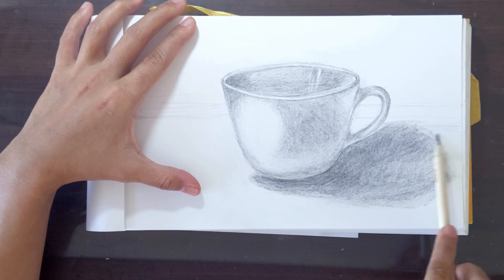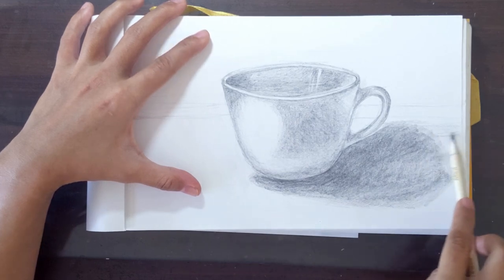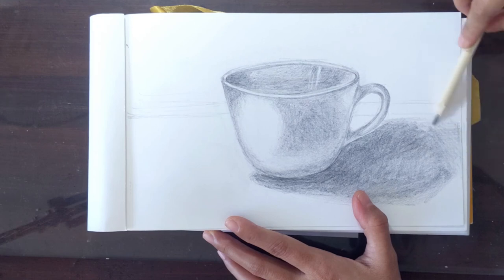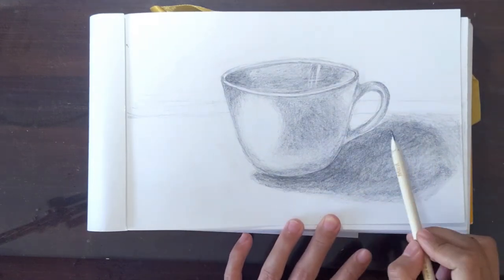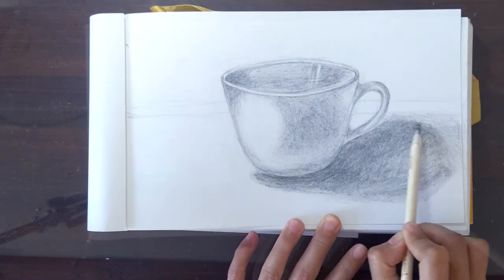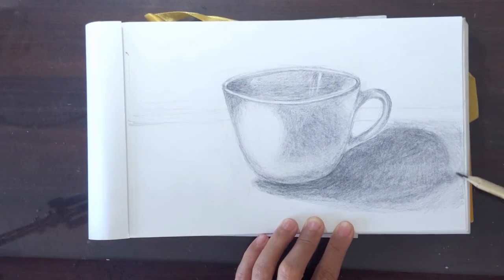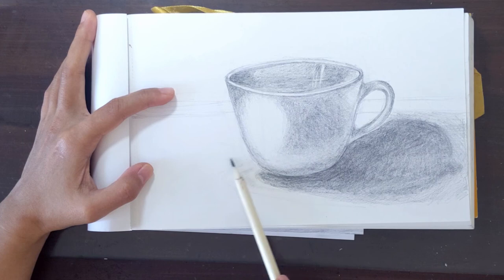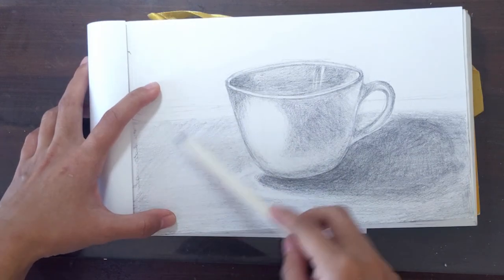Don't forget to blend after. After doing the shadow, we can now shade the background. We can start shading the surface where the cup is placed. Again, use a light hand and go back to your model to get the shading correctly.